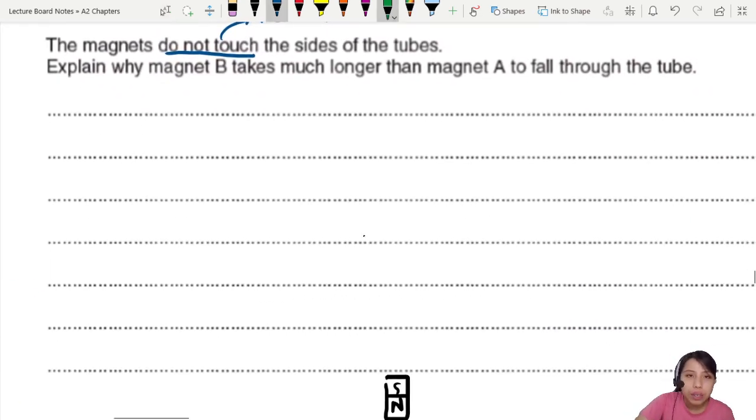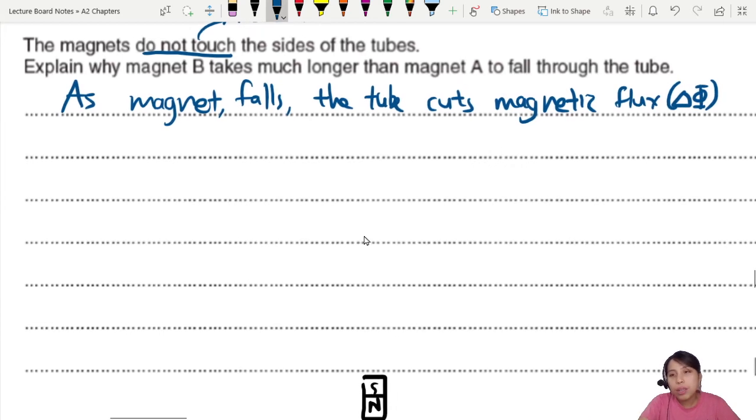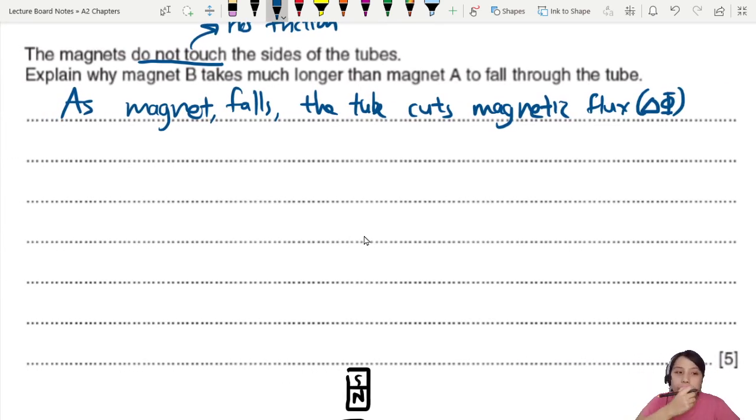So let's talk about the first thing. Yes, there is a change in flux. So we say, as magnet falls, what happened? The tube is cutting the magnetic flux or there's a change in flux. So we can say, as magnet falls, the tube cuts the magnetic flux. So this is talking about the idea that there is a change in flux. The whole tube, different sections of the tube will experience different change in flux. And what happens when there's a change in flux?